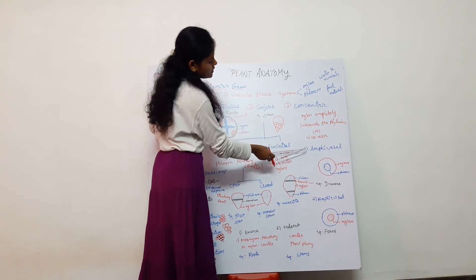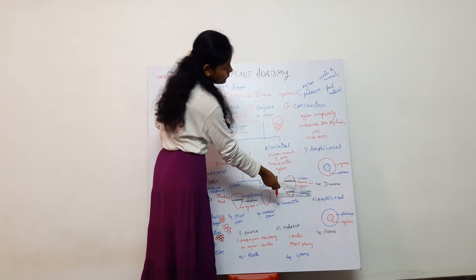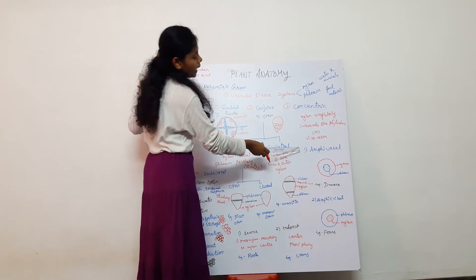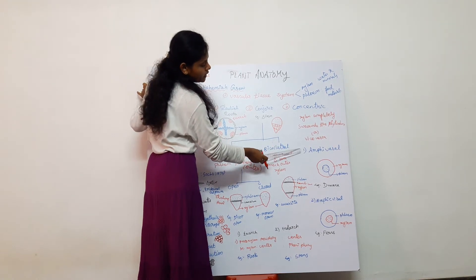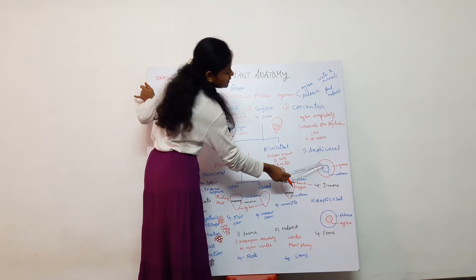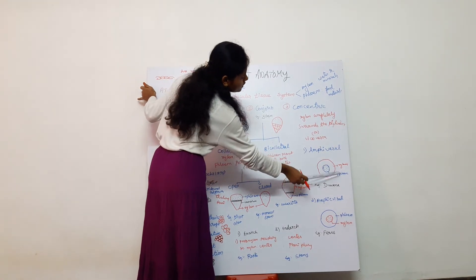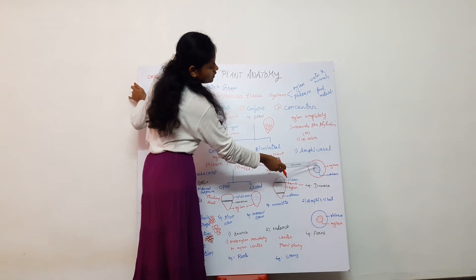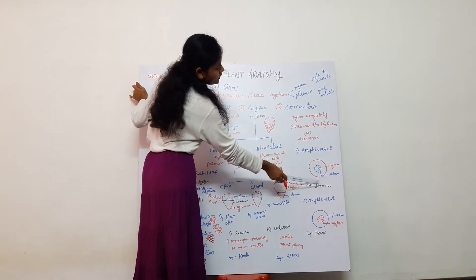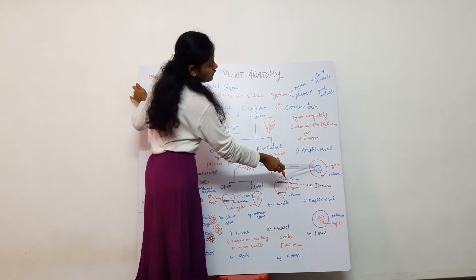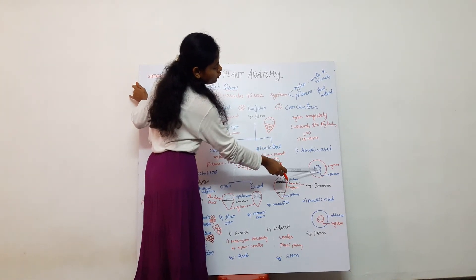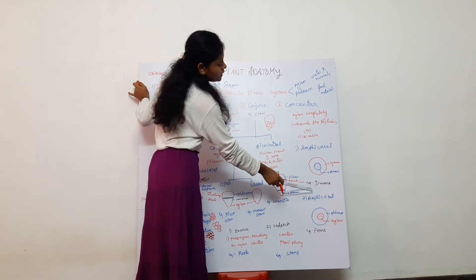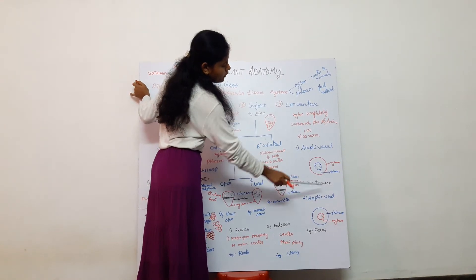The two types are amphivasal and amphicribral. In amphivasal, xylem is present on the outer side and phloem is present in the center. For example, Resina.